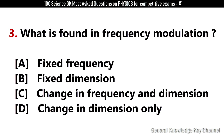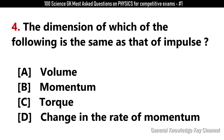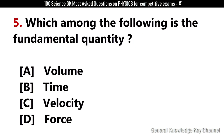What is found in frequency modulation? Answer A: Fixed frequency. The dimension of which of the following is the same as that of impulse? Answer B: Momentum. Which among the following is the fundamental quantity? Answer B: Time.